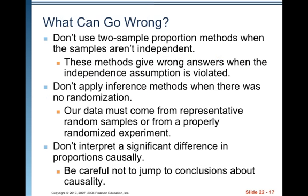So what can go wrong? Don't use two sample proportion methods when the samples aren't independent. These methods give wrong answers when the independence assumption is violated. Don't apply inference methods when there was no randomization. Our data must come from representative random samples or from a properly randomized experiment. Don't interpret a significant difference in proportions causally. Be careful not to jump to conclusions about causality.